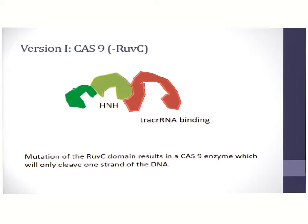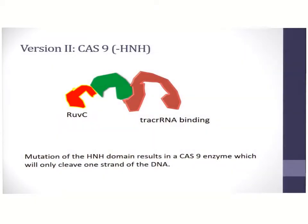There are many versions of Cas9 available. The first is designated as negative RUVC — it has a mutation in the RUVC domain, which results in a mutant Cas9 enzyme with the ability to cut only one strand of DNA. The second version is similar; however, it has a mutation at the HNH domain, and this enzyme can also only cleave one strand of the DNA molecule.